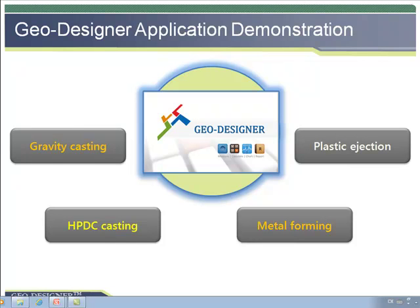Next, we will have some demonstrations for GeoDesigner to show the using method and benefits. We selected a few industrial manufacturing processes, such as the gravity casting process, high pressure die casting process, plastic ejection process, and sheet metal forming process.